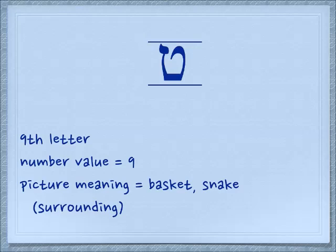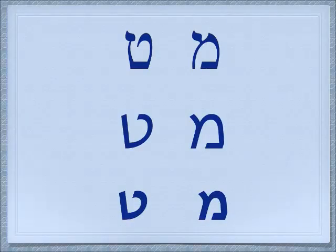Our first letter for today is the Tet. You'll find it is the ninth character. It has a number value of nine, and its picture meaning is either a basket or a snake — the idea of surrounding something.